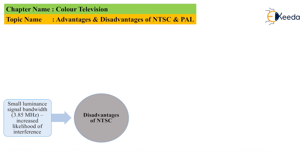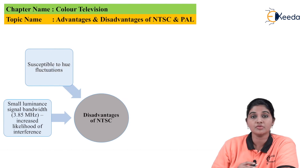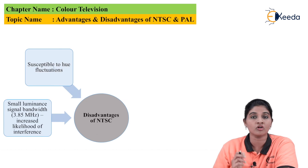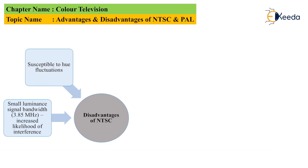The first disadvantage of NTSC is small luminance signal bandwidth, which is approximately equal to 3.38 megahertz, and this increases the chances of interference. The second disadvantage is that it is susceptible to hue fluctuation — that means there will be a change in the color of the picture when we use the NTSC system in the open environment or broadcasting environment.